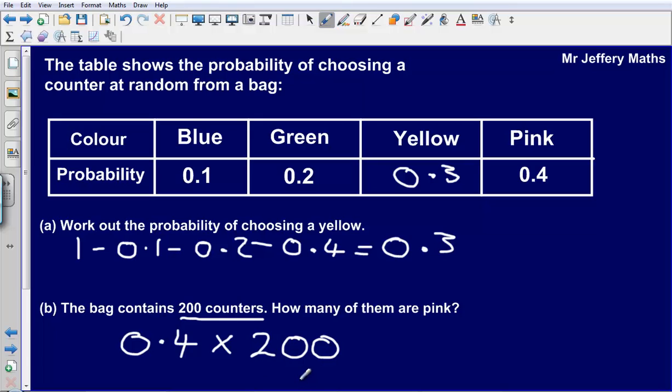So 0.4 multiplied by 200 will tell us how many are pink. 0.4 times 200 gives us an answer of 80. So how many of them are pink? The answer there would be 80.